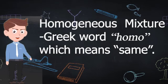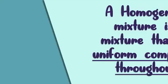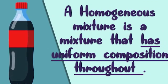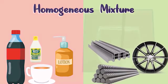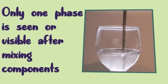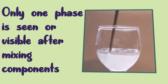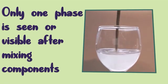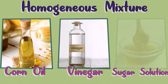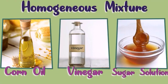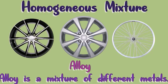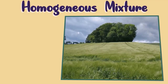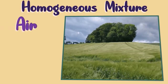Homogeneous mixture. The word homogeneous comes from a Greek word, homo, which means same. A homogeneous mixture is a mixture that has uniform composition throughout. It could be in a liquid or a solid form. Only one phase is visible after mixing the different components because the particles are uniformly distributed. Corn oil, vinegar, and sugar solutions are homogeneous mixtures since only a colorless liquid is observed. An alloy is a mixture of different melted metals and is also a homogeneous mixture.